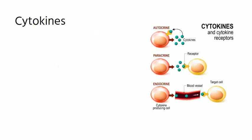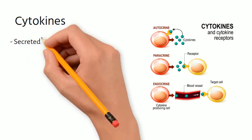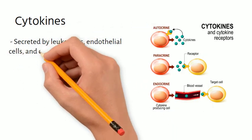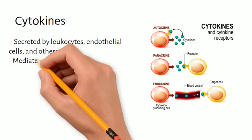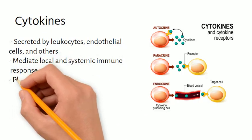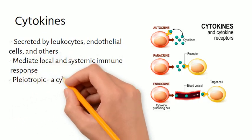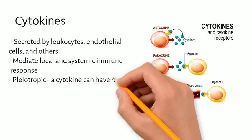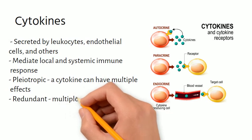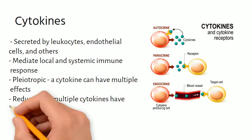Cytokines are the primary messengers of the immune system. Cytokines can function in an autocrine, paracrine, or endocrine manner. They are secreted by leukocytes, endothelial cells, and other types of cells. Cytokines mediate local and systemic immune responses. They are pleiotropic, meaning one cytokine can have multiple effects, and redundant, as multiple cytokines can have the same or overlapping effects.